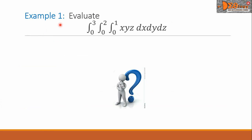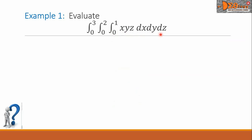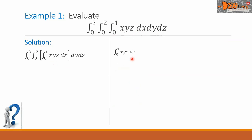Let us see example one. Evaluate the triple integral: the first integral from 0 to 3, the second integral from 0 to 2, the innermost integral from 0 to 1. The function is x, y, z, and this is dx, dy, dz. Our step one is to evaluate the innermost integral. We can use a grouping symbol to identify that. Then let us copy this innermost integral on the side and evaluate with respect to x.